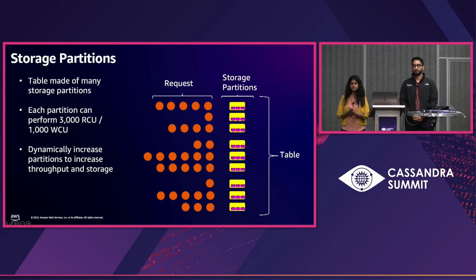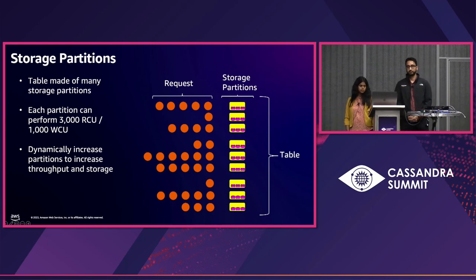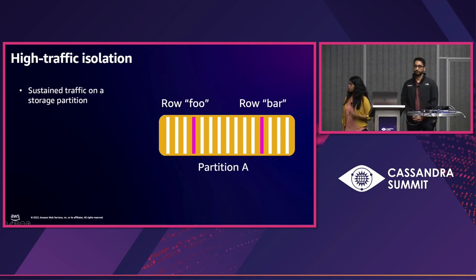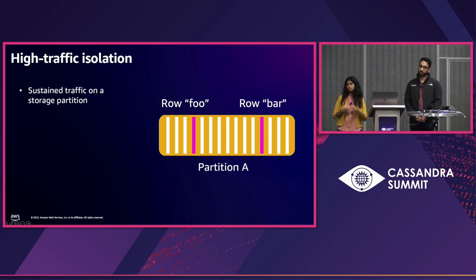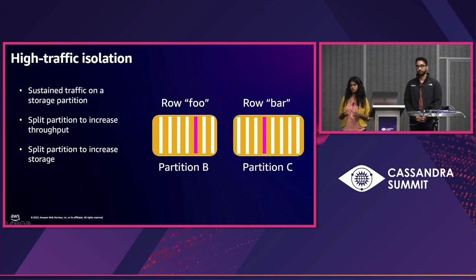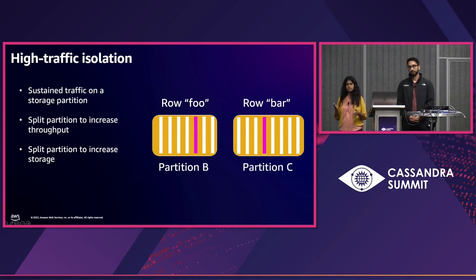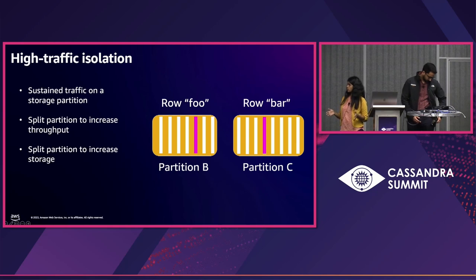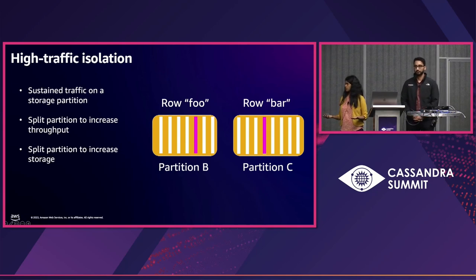But what if there's a skew in the request pattern? In a skewed case — for example, partition A receiving sustained traffic on rows 'foo' and 'bar' — throughput becomes limited. The system constantly monitors for this. When a partition reaches above a certain utilization, we automatically identify where the hotness is coming from and split the partition so that row foo and row bar end up in two different partitions, doubling throughput. This partition splitting also helps with storage.